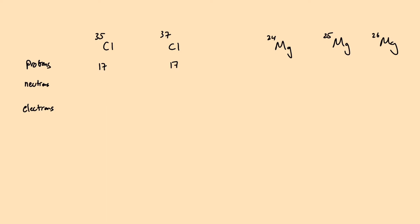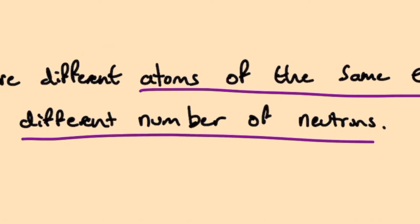This now leaves us with finding the number of neutrons for both isotopes. The proton number for both is 17, and the number of neutrons is mass number minus the proton number. So for chlorine-35, it will be 35 minus 17, which gives us 18 neutrons. For chlorine-37, it will be 37 minus 17, which gives us 20 neutrons — a difference of two neutrons between the two isotopes. This fits in with the third part of our definition, which states that isotopes have a different number of neutrons.